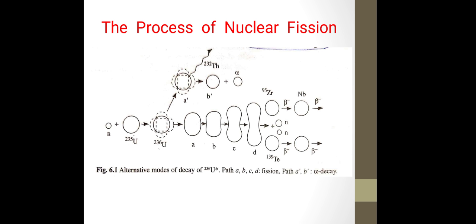The formed fragments undergo further beta emission till a stable nuclide isobaric with the primary fragment is reached. In this case primary fragment is zirconium, in this case it is tellurium. It undergoes further beta emission till a stable nuclide which is isobaric with this primary fragment is formed. This is the process of nuclear fission.